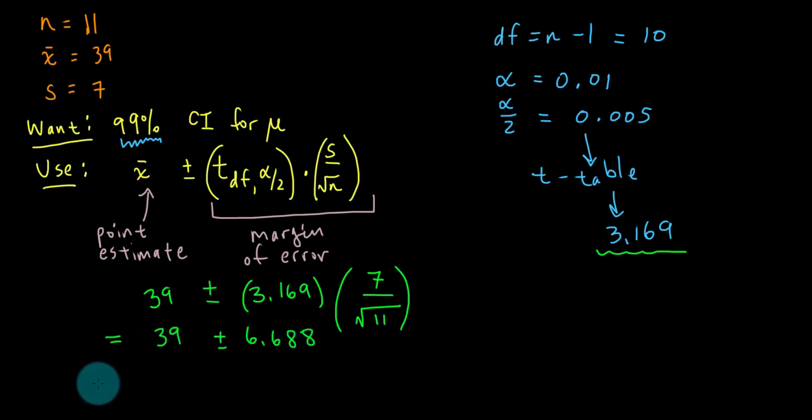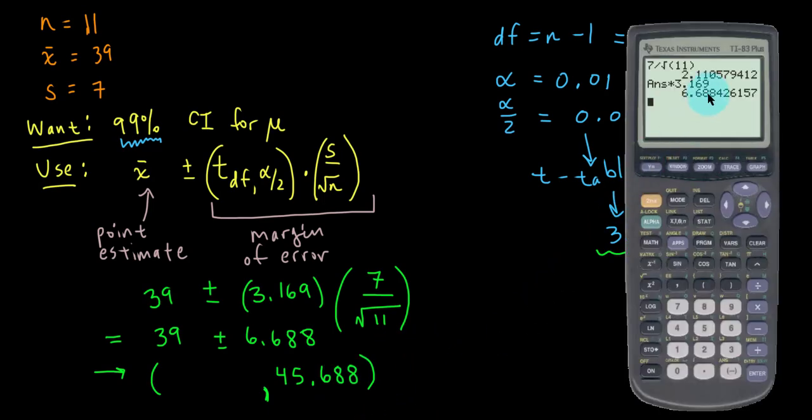Now that's all we really need to answer the question on the homework. But for completeness sake, I'm going to actually create the interval in interval notation. I can see that that would add up to 45.688. But I will double check my subtraction here, where I'm taking the point estimate of 39 and I am subtracting 6.688. 32.312.